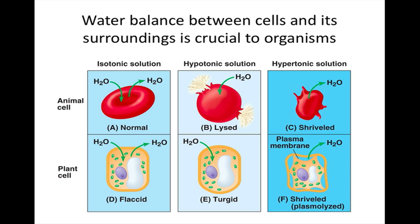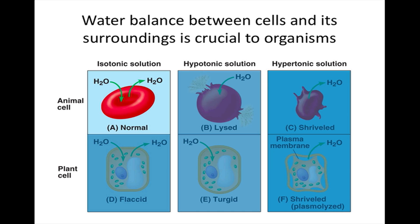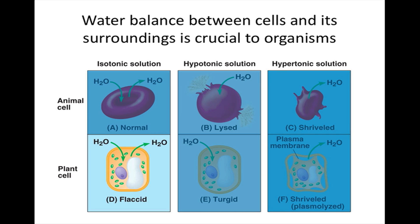The term tonicity describes the ability of a solution to cause a cell to gain or lose water. The tonicity of a solution mainly depends on its concentration of solutes that cannot cross the plasma membrane, relative to the concentration of solutes in the cell. The solute concentration of a cell and its isotonic environment are essentially equal, in that the cell gains water at the same rate that it loses it. For an animal cell, the isotonic environment is normal. For the plant cell, this environment leaves the cell flaccid, or soft.